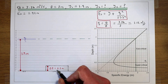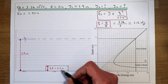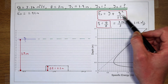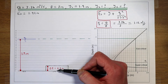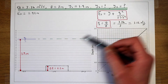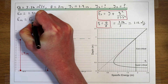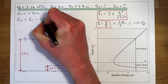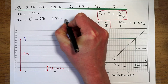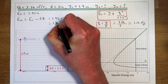The specific energy at point two is the total energy in the flow above the step. The step reduces the specific energy because it converts some of the flow energy into potential energy, reducing the energy available for flow depth and kinetic energy. So the specific energy at point two is the specific energy at point one minus the step height delta z: 1.92 minus 0.3 gives us a new specific energy of 1.62 metres.